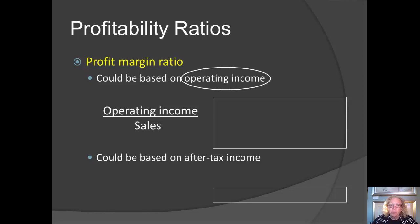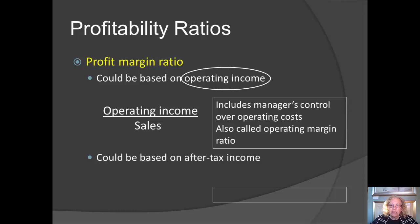In that case, the profit margin ratio is operating income divided by sales. This tells us the extent to which the manager has controlled operating expenses. This ratio is also sometimes called the operating margin ratio.